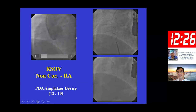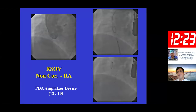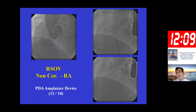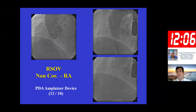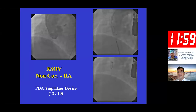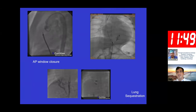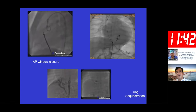Ruptured sinus of Valsalva, always a surgical domain, can now be addressed with a device. A PDA ductal occluder and subsequently a muscular VSD occluder were deployed — in Patna we deployed a 14 mm muscular VSD occluder for a 14 mm ruptured sinus of Valsalva with significant shunt. The patient came in failure and distress and was immediately relieved after the procedure — that is the beauty of intervention: instant results.